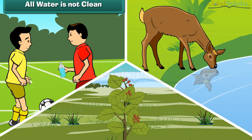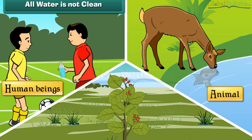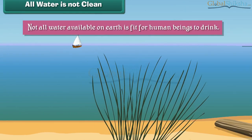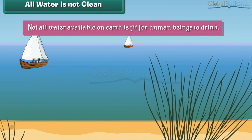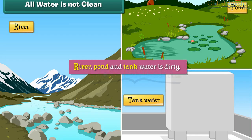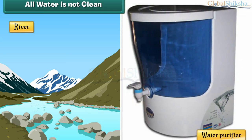All water is not clean. All living things — human beings, animals, and plants — need water to live. But not all water available on earth is fit for human beings to drink. Sea water is salty. River, pond, and tank water is dirty. Therefore, water must be cleaned first, and only then it becomes fit for drinking.